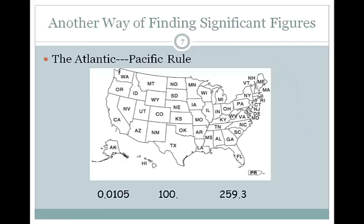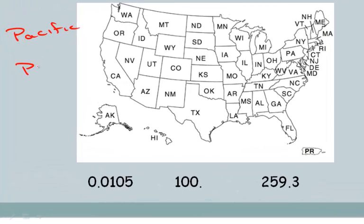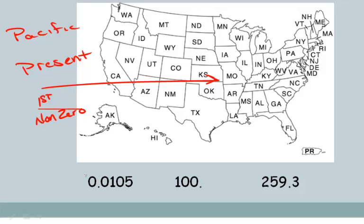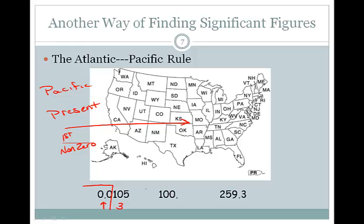Another way to determine if a number is significant is using the Atlantic-Pacific rule. Pacific stands for a present decimal point. So if the decimal point is there, we start counting from the Pacific side — from the left — as soon as we hit our first non-zero number. In 1.05, there is a decimal point, so we start counting from the left at the first non-zero number: the 1, the 0, and the 5 — three significant figures. In 1.00, we start from the left: the 1, the 0, and the 0 — three significant figures. With a decimal point present, starting here gives us four significant figures.